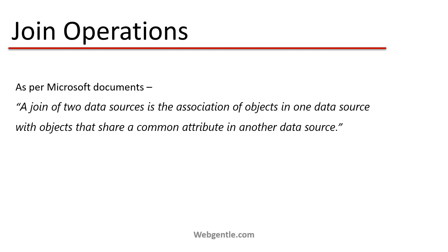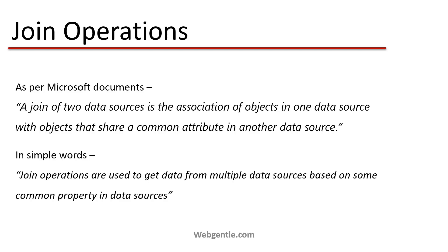First, let's understand what join operations are. As per the Microsoft documentation at docs.microsoft.com, a join of two data sources is the association of objects in one data source with objects that share a common attribute in another data source. If I simplify this definition: join operations are used to get data from two or more data sources based on some common property.